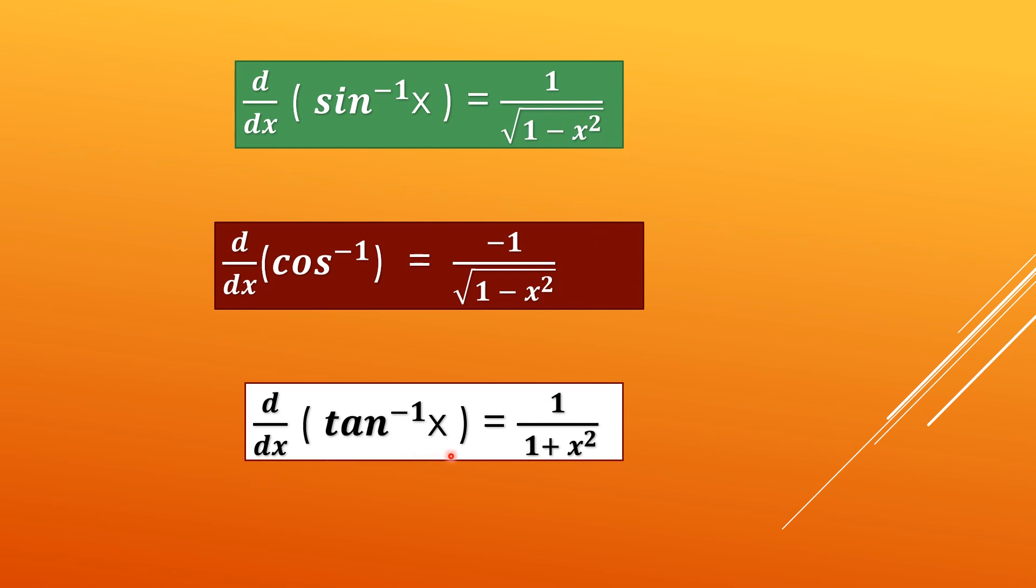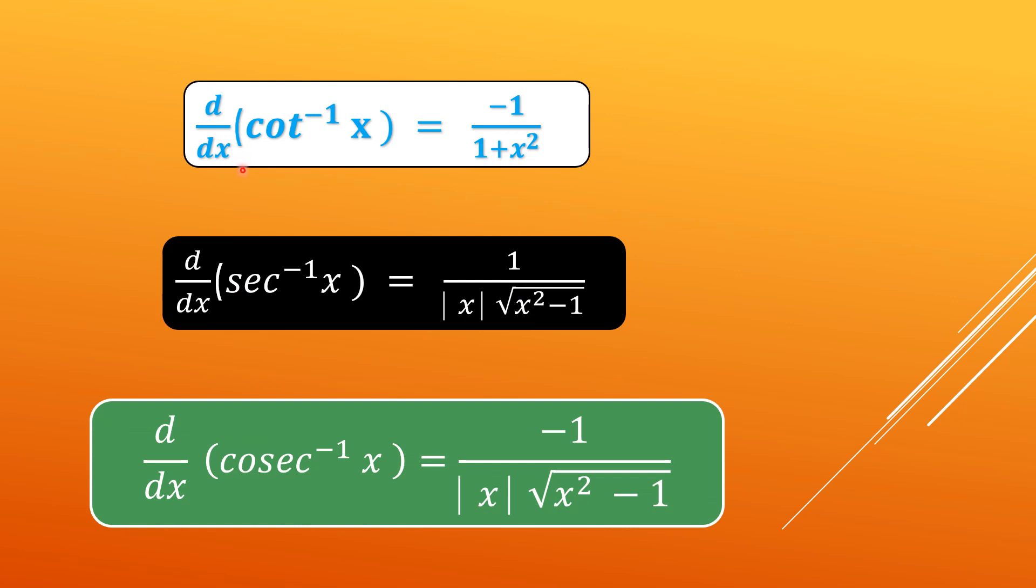Derivative of tan inverse x is taken as 1 upon 1 plus x square. Next, derivative of cot inverse x is minus 1 upon 1 plus x square. This and tan inverse x is just the same with this difference of the negative sign. Likewise, there was a difference of sine and cos. So is the difference between tan and cot inverse.